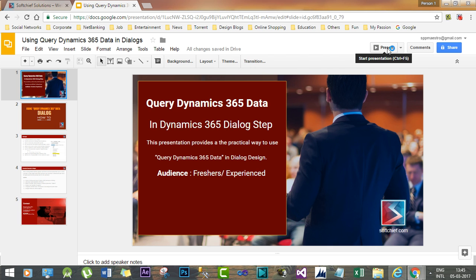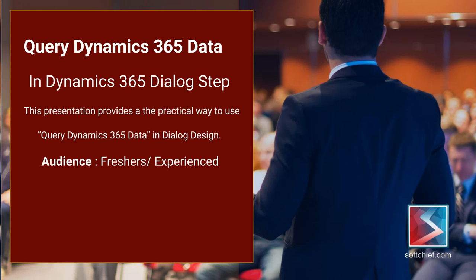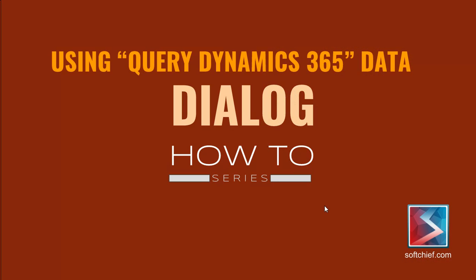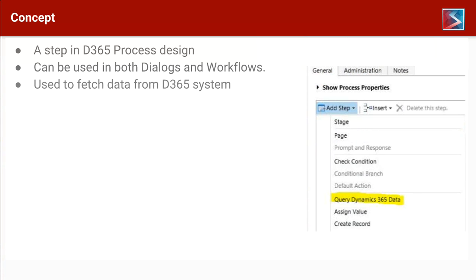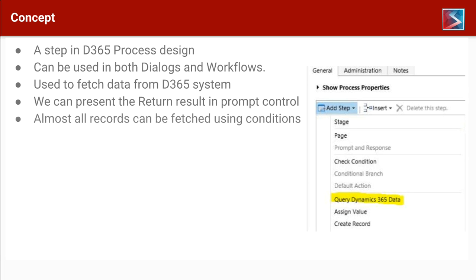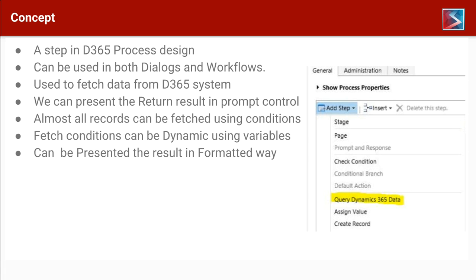Welcome to the session where I will discuss one of the most interesting parts of dialogues. Here I will discuss how to use Query Dynamics 365 Data step while developing dialogues. The most fundamental thing is that Query Dynamics 365 Data is a step we can use while designing workflows or dialogues. Using this step, we can fetch any type of available system data or custom data, and present the returned results in a prompt control like a picklist or two-option sets.